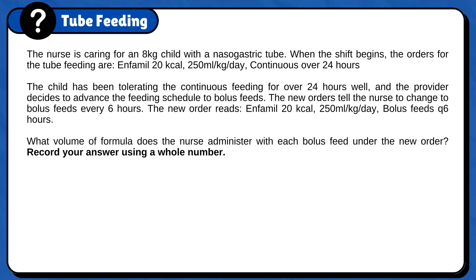The nurse cares for an 8 kg child with a nasogastric tube. When the shift begins, the orders for the tube feeding are Amphamil 20 kJ, 250 ml per kg per day, continuous over 24 hours. The child has been tolerating the continuous feeding for over 24 hours well, and the provider decides to advance the feeding schedule to bolus feeds. The new orders tell the nurse to change to bolus feeds every 6 hours.